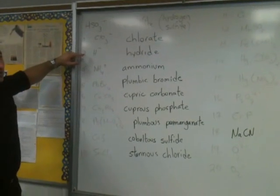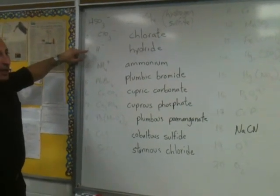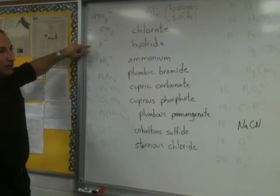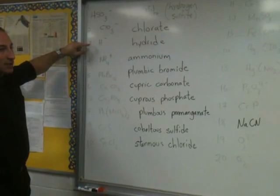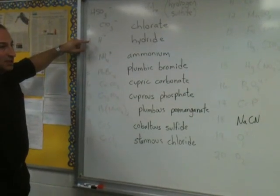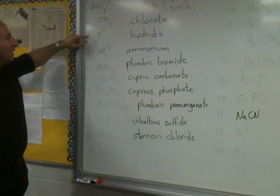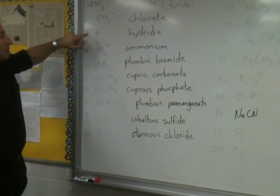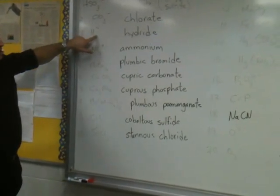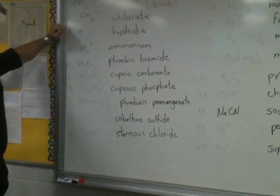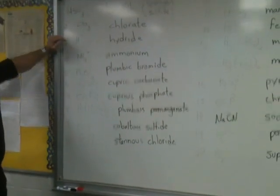Hydrogen sometimes behaves like an anion, although most often it's seen as H⁺ — the proton, they call it. But when it's coupled to metals, hydrogen will sometimes take the negative charge, so we call it hydride.